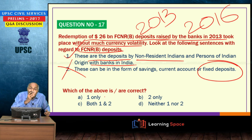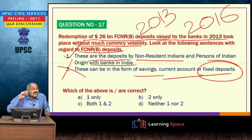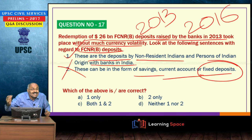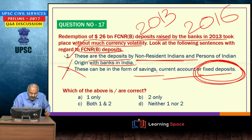NRO and NRE deposits are rupee-denominated deposits meant for NRIs; they can be maintained in savings accounts, current accounts, or fixed deposits. FCNRB deposits, by contrast, are maintained in approved foreign currencies, are opened only as fixed deposits by NRIs and PIOs, with a minimum period of 1 year and a maximum of 5 years. Only statement 1 is correct.